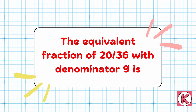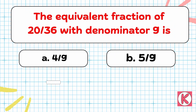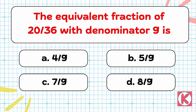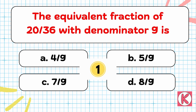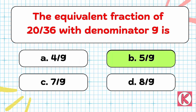Next question. The equivalent fraction of 20 by 36 with denominator 9 is... Correct answer: Option B — 5 by 9.